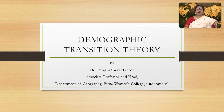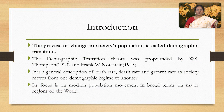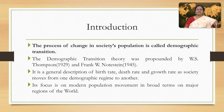Today we will discuss one of the prime theories of population, which is known as demographic transition theory. The process of change in society's population is called demographic transition. The word demographic transition was first coined by W.S. Thompson in the year 1929, and the theory was later propounded by Frank Nordstein in the year 1945.